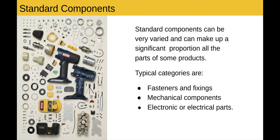Standard components can be very varied and can make up a significant proportion of all the parts of some products. Typical categories are fixings and fasteners, mechanical components, and electronic or electrical parts. We can see here with this cordless drill an exploded diagram of the parts, and things like the motor and the batteries are all standard components — they are not made by the drill manufacturer.